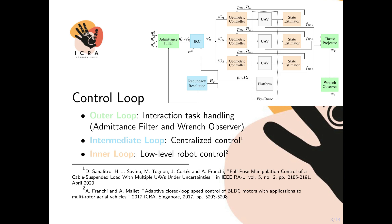To achieve this objective, we design a control architecture which consists of three nested loops. The outer control loop handles the interaction task by generating compliant system trajectories in response to external wrench action on the platform.